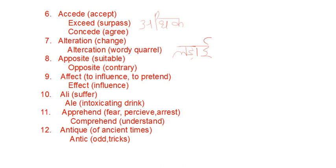Another pair is apposite and opposite. Apposite means suitable. Opposite means contrary.